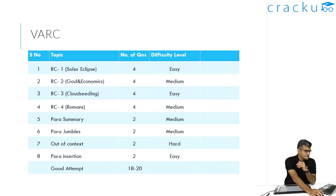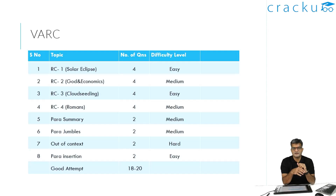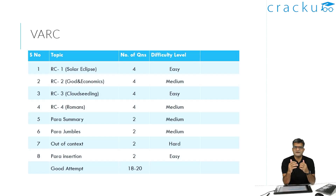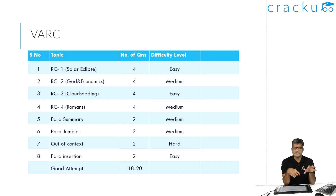Now coming to the verbal section, the para-summaries I found to be on the difficult side. But many people actually did quite well in the para-summaries, which was surprising. I got both para-summaries wrong, and it was not as if I was even close. I felt some of the options were not completely giving the gist of what the para-summary was. So for me, para-summaries were on the difficult side. But because most people got them correct, we are putting this as medium.